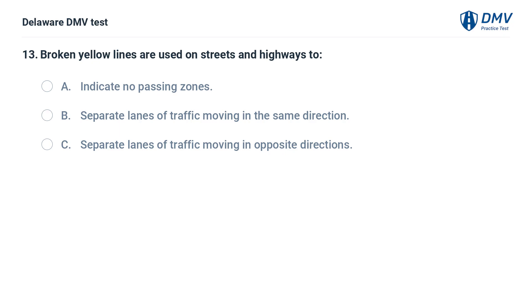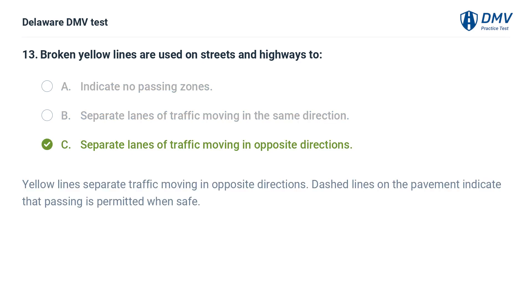Broken yellow lines are used on streets and highways to: A. Indicate no passing zones. B. Separate lanes of traffic moving in the same direction. C. Separate lanes of traffic moving in opposite directions. Answer: C. Yellow lines separate traffic moving in opposite directions. Dashed lines on the pavement indicate that passing is permitted when safe.